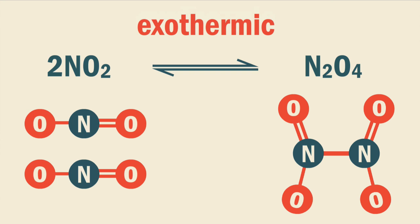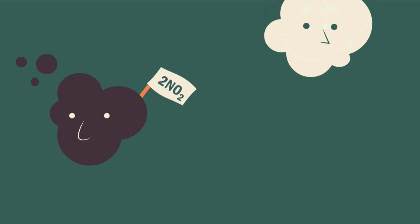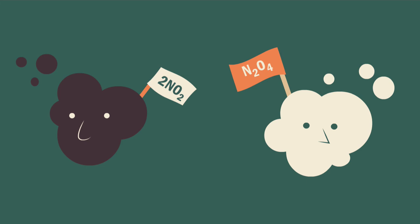The dimerization of nitrogen dioxide to dinitrogen tetroxide is an exothermic reaction. Nitrogen dioxide is a brown gas, whereas dinitrogen tetroxide is colorless. What observations do you think can be made when the temperature is decreased? How about when the temperature is increased? Please pause the lesson to think about this and resume once you are done.